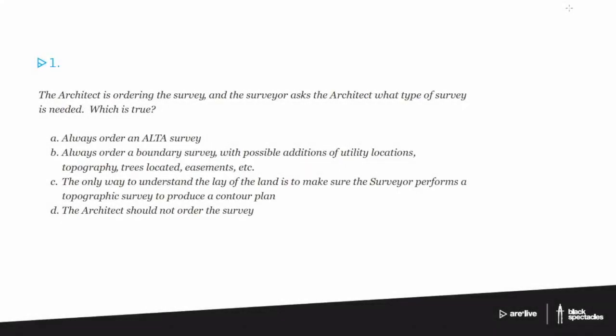Okay, let's run through a few of these questions and see what we say. So number one, the architect is ordering the survey. The surveyor asks the architect what type of survey is needed. Which of the following is true?